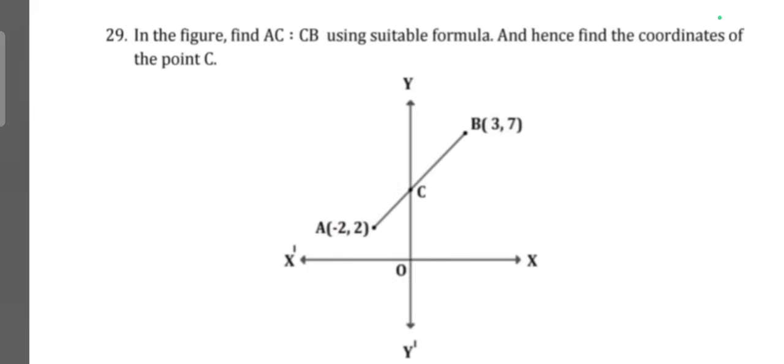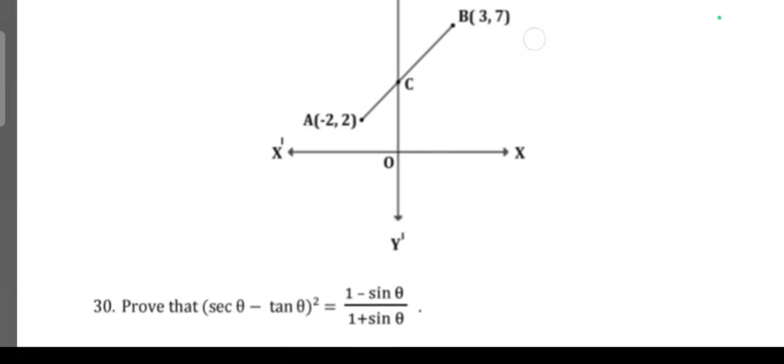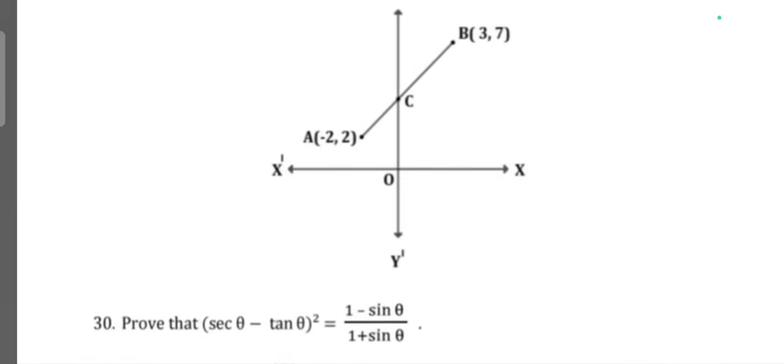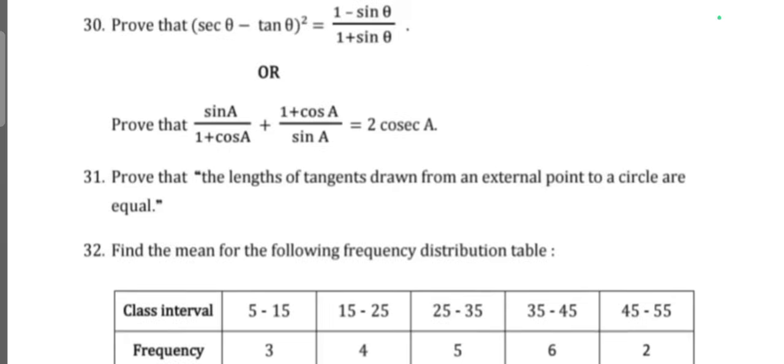Or: The length of a rectangular plot is one meter less than twice its breadth. If the area of the plot is 190 meter square, find its length and breadth. Question 29: In the figure, find AC to BC using the suitable formula, and hence find the coordinates of point C. Question 30: Prove that secant theta minus tan theta whole square is equal to one minus sine theta divided by one plus sine theta, or prove that sine A divided by one plus cos A plus one plus cos A divided by sine A is equal to 2 cosecant A.